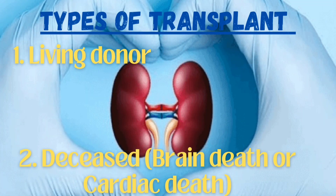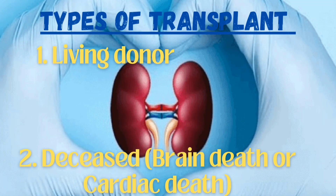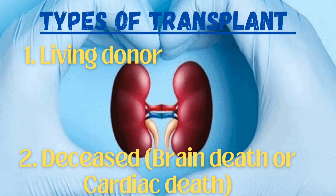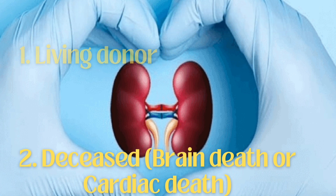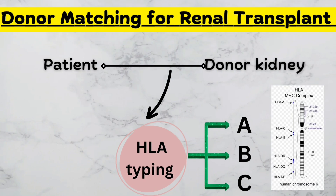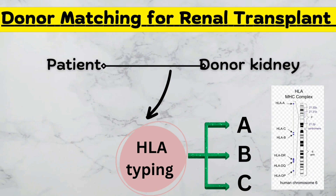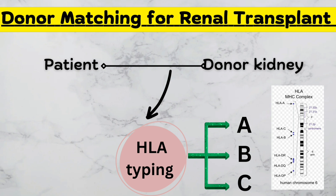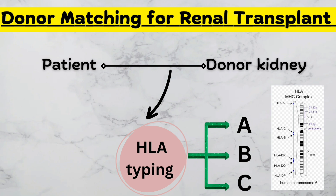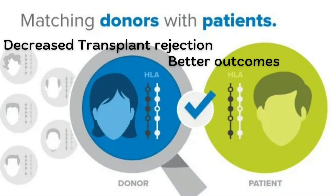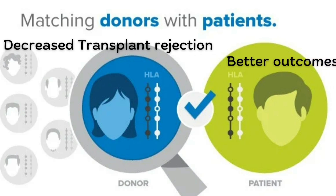Types of renal transplant include living donor transplant or deceased donor transplant, either brain death or cardiac death. For donor matching, the patient and donor kidney are matched by HLA typing. There are three types — type A, B, and C — which are present on chromosome number six. Matching donor with patient leads to decreased transplant rejection and better outcomes.